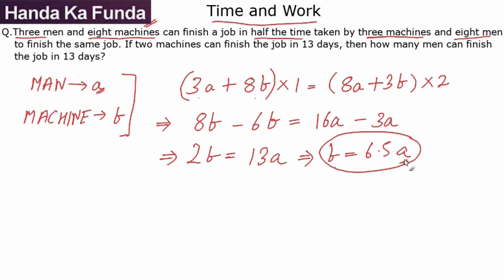Now we are given two machines can finish the job in 13 days. That means my total work that needs to be done will be done by two machines, so 2b, and they will do it over a period of 13 days. Now how many men can finish the same job in 13 days?